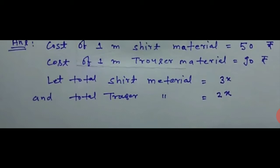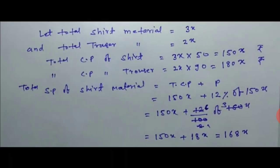We will assume the total shirt material is 3x and total trouser is 2x. To get the total cost price of the shirt, we multiply: 3x times 50 equals 150x meters. Now total CP of trouser will be 2x times 90, which equals 180x.